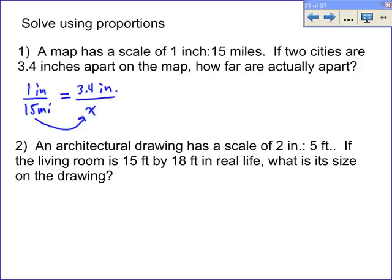The nice one about this is, x times 1 is just x, and that's got to equal 15 times 3.4, which 15 times 3.4 is equal to 51. So, they are actually, those two cities are actually 51 miles apart.